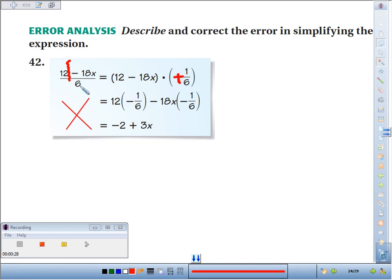Let's just see what I would get. 12 divided by 6, that would be 2. Negative 18x divided by 6, well, negative 18 divided by 6 is negative 3, we tack on the x.